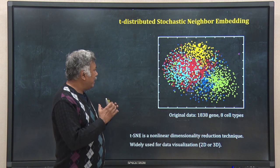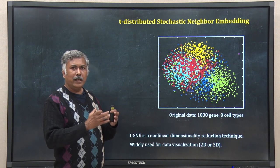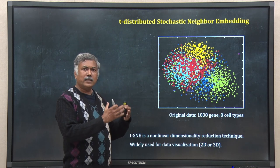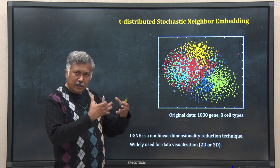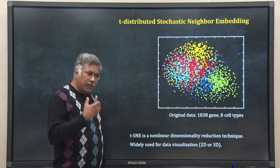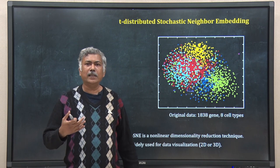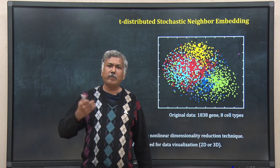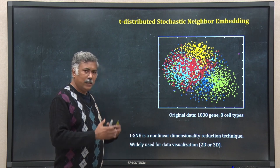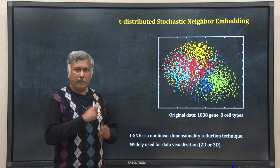Here you can easily see the dispersion among the different cell types. There are some clusters; in some cases there is no cluster — there is diffusion also. This is how you can visualize higher dimensional data like gene expression data using T-SNE in two or three dimensions.